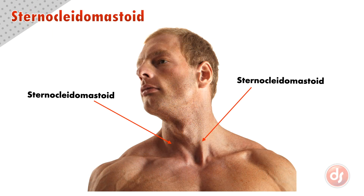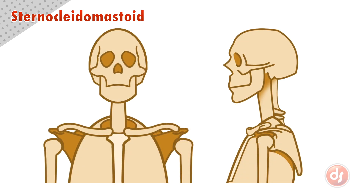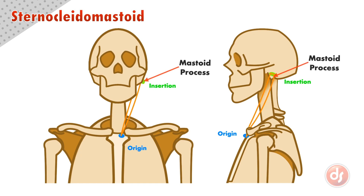The sternocleidomastoid is the most prominent muscle in the neck. It has two sections or heads. The first originates on the top of the sternum, just inside of the clavicle. The muscle comes up to insert into the mastoid process, a big bump on the skull behind the ear.